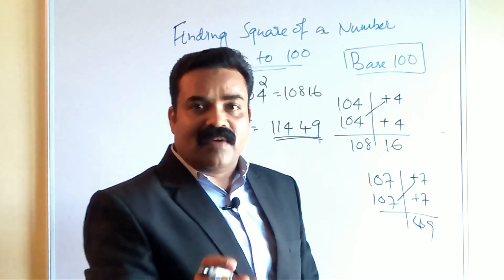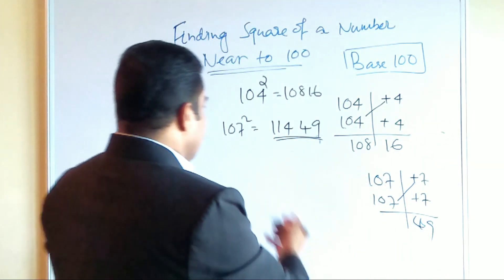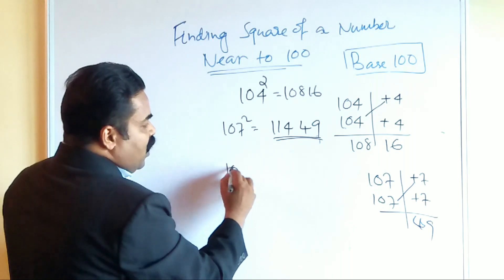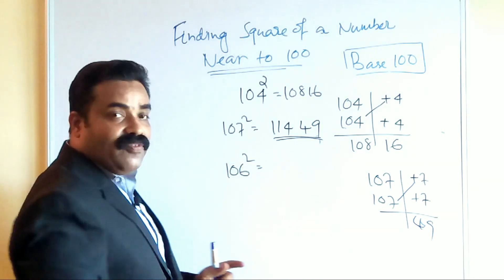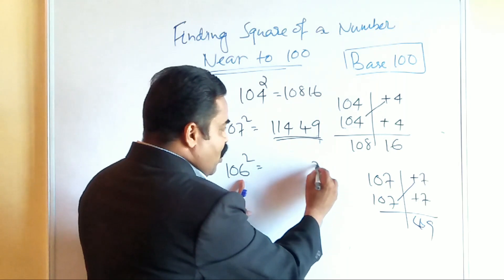So let us see you want to find out 106 square. Tell me what is the answer for 106 square? 6 square is what? 36, so last two digits you got. Then cross addition, what will come? 106 plus 6. So what will come? 112.